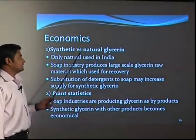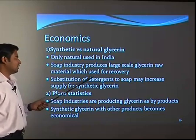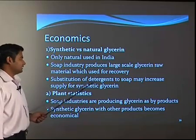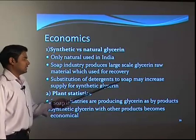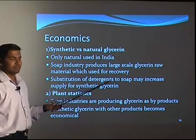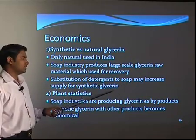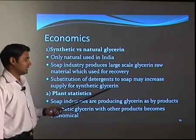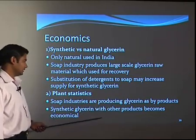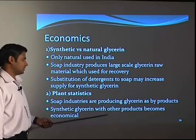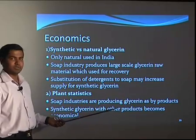Looking at the economics of synthetic versus natural glycerin, only natural glycerin is used in India. Soap industry produces large scale glycerin which is used for recovery. Substitution of soap by detergent may increase supply and demand for synthetic glycerin. Detergents are more in demand nowadays than soap because soaps have limitations in hard water. When going for detergent manufacturing, the glycerin obtained is much purer and in good quantity. Soap industries produce glycerin as a byproduct and synthetic glycerin with other products becomes economical; alone glycerin production by synthetic route is not economical, so it is generally produced along with other products.